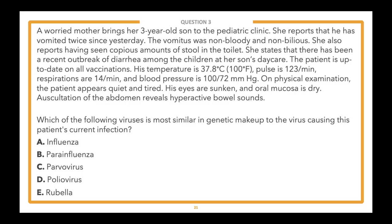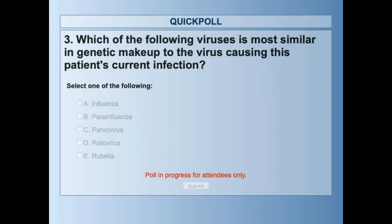Starting from the bottom with the answer choices: E — rubella. D — poliovirus. C — parvovirus. B — parainfluenza. And A — influenza. We'll give everyone a couple of seconds to gather your thoughts, then please go ahead and select an answer choice and we'll talk about it in just a couple of seconds.